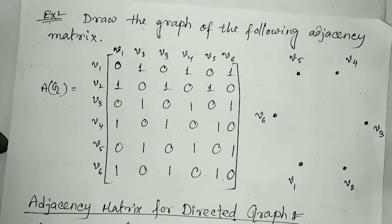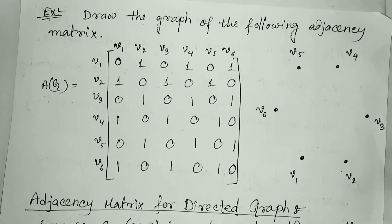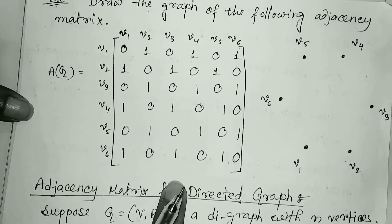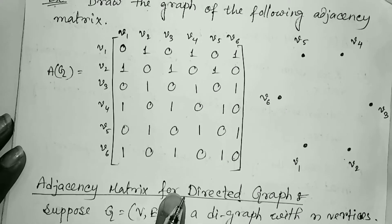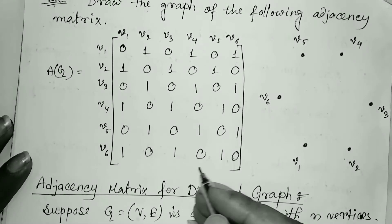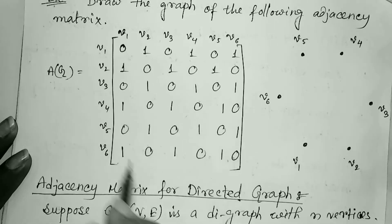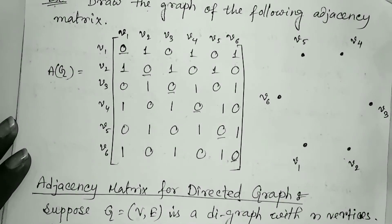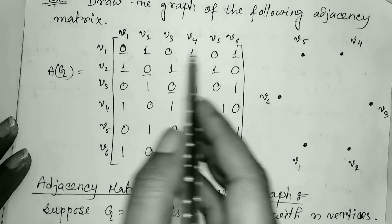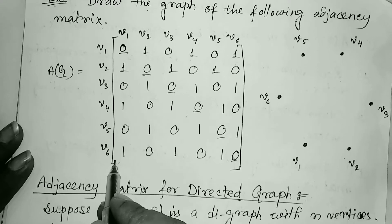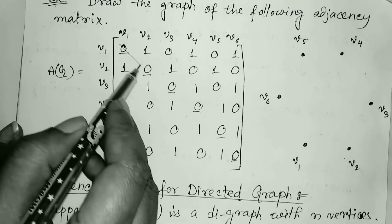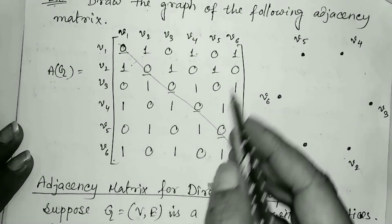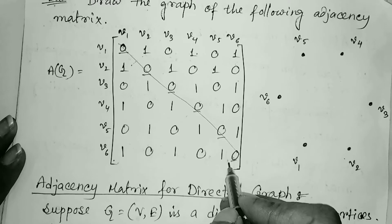Now for the reverse problem: draw the graph corresponding to a given adjacency matrix. First, we observe the diagonal entries — all diagonals are 0, so there are no self-loops. As all entries are exactly 0 or 1, there are no parallel edges. Observing the diagonal symmetry, this is a symmetric matrix, so it is a simple undirected graph.